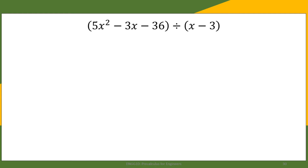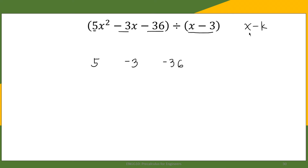Once it is in standard form, we write the coefficients: 5, negative 3, and negative 36, each separated by space. Then we look at the value of k. Our divisor is in the form x minus k, and we have x minus 3, so k is equal to positive 3. The value of k is written in a semi-box in this portion of the solution.